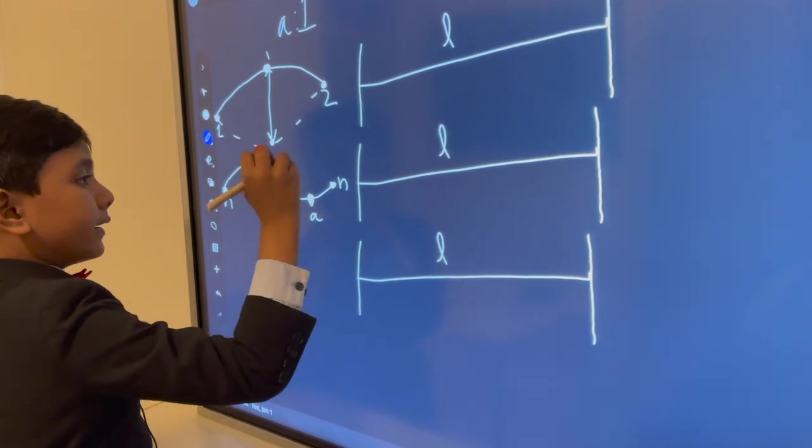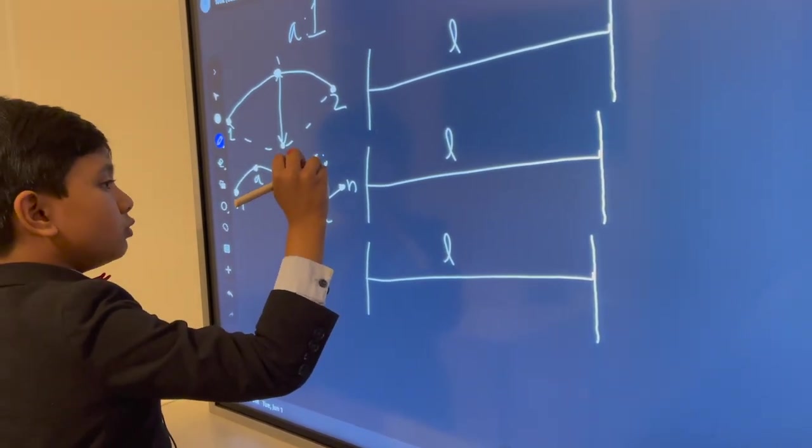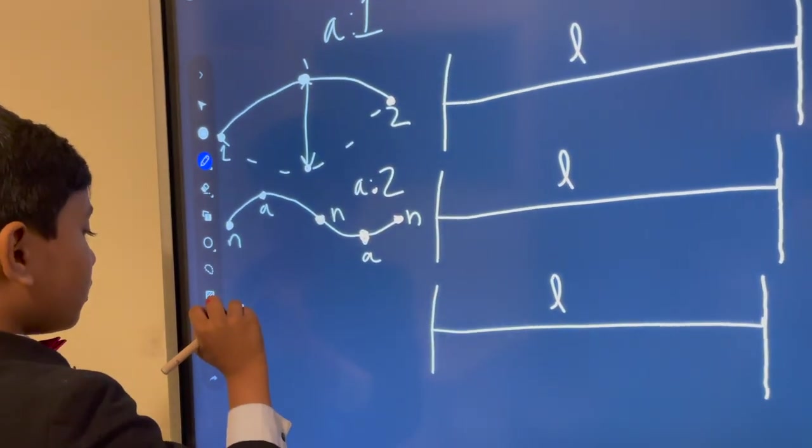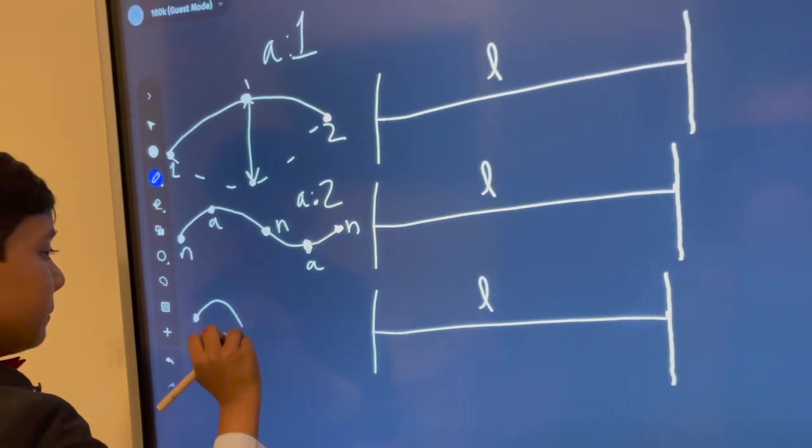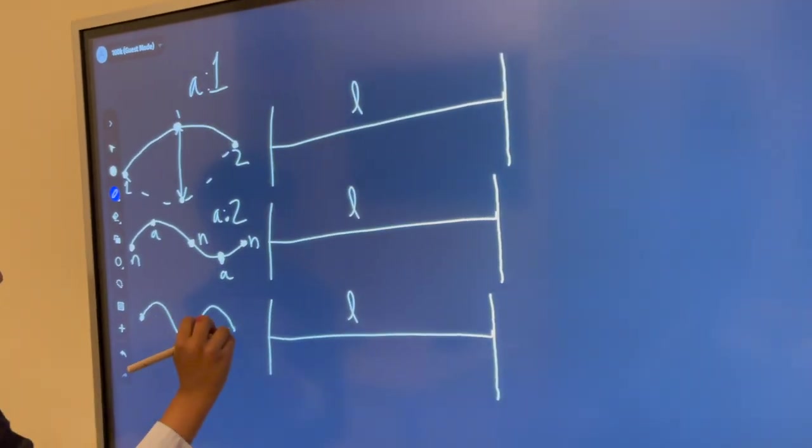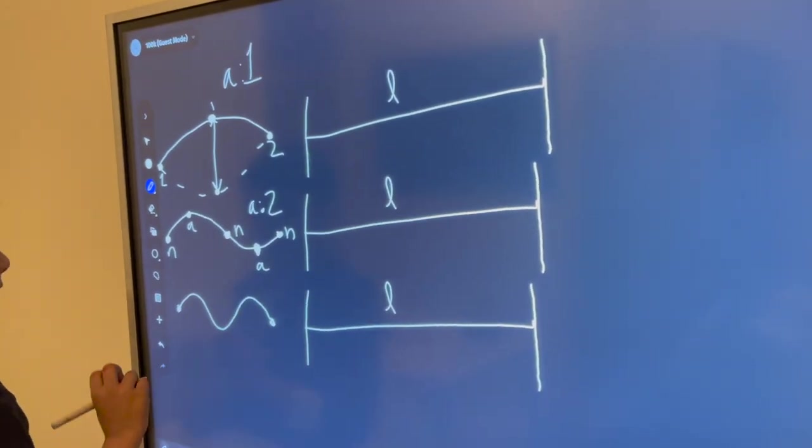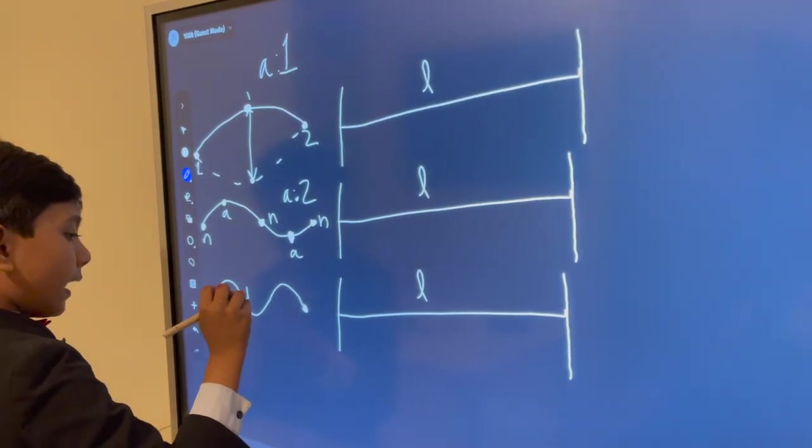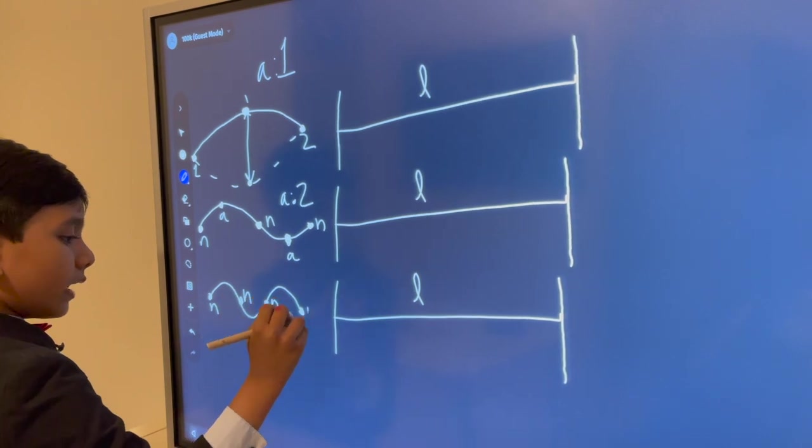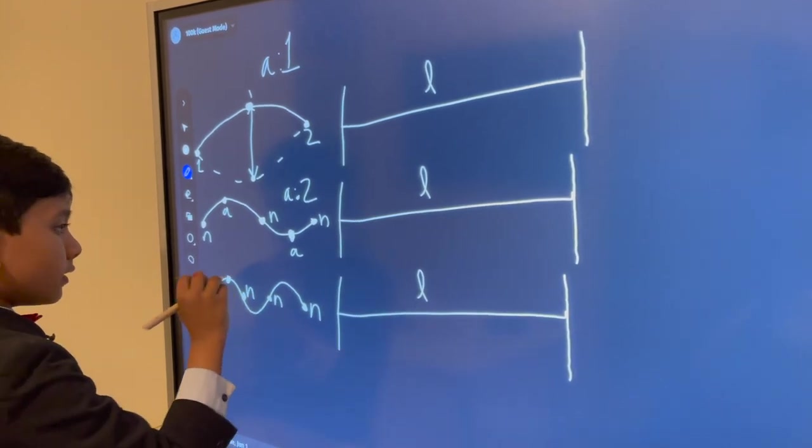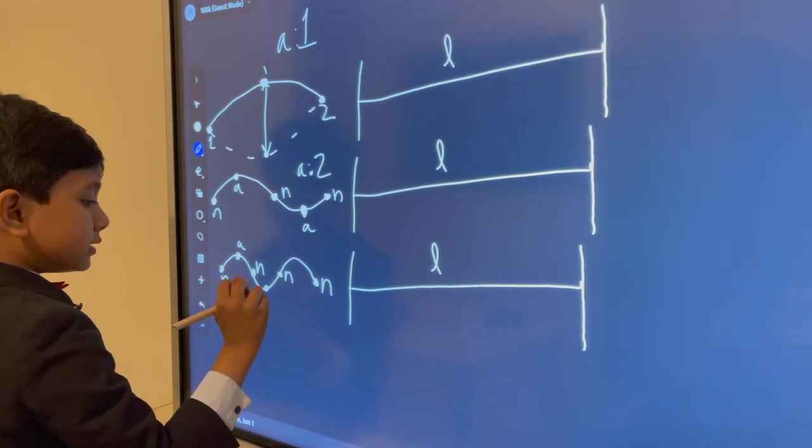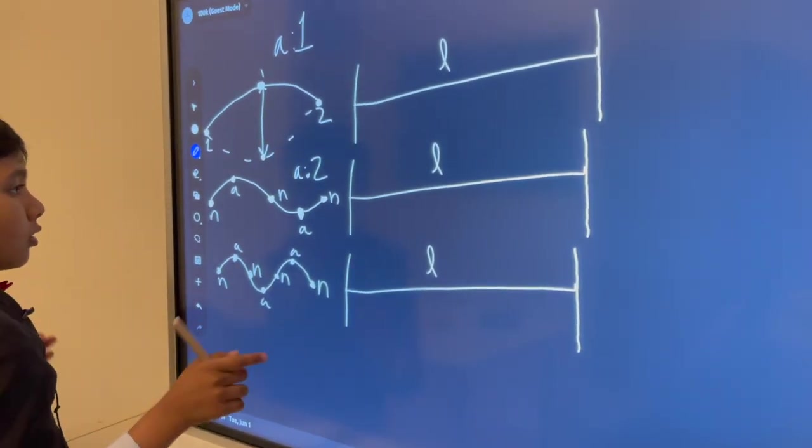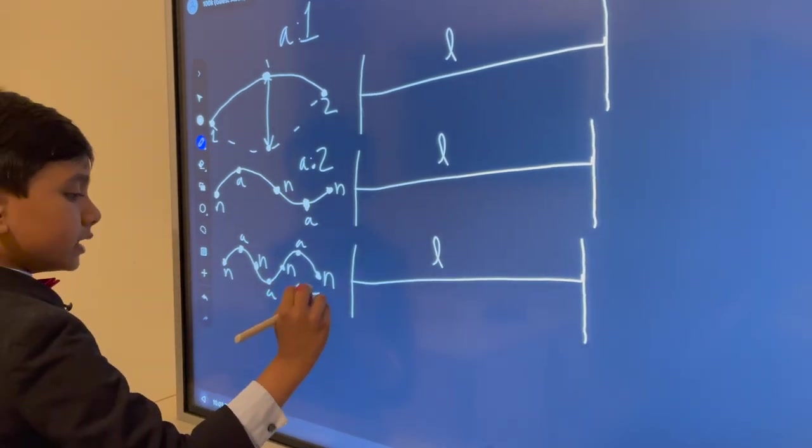So antinode count is two. And then, for our final third harmonic, which kind of looks like three bellies. Antinodes, then that gives us four nodes and three antinodes. Right. So antinode count is three.